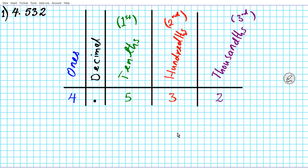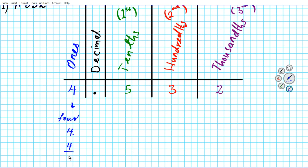Let's identify the names of each digit based on their place. Starting with the ones place: this digit is 4. In name format it's 'four,' in digit form it's just 4, and as a fraction it's 4 over 1. Something to keep in mind for lesson 1.3b: when you divide any number by one, you always end up with the number you started with.